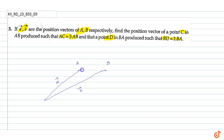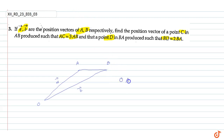Now what is our AB vector? We know that OA vector plus AB vector is equal to OB vector. So AB vector is equal to B vector minus A vector.